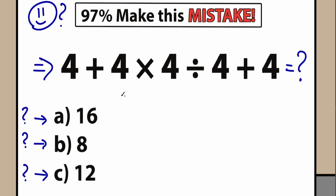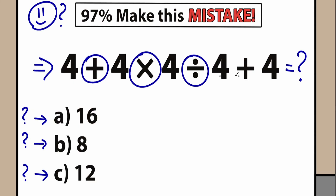This is a quick and basic algebra question, but a lot of students make this common mistake. We have an addition sign, a multiplication sign, division, and addition. What makes all the difference in the world is the order we do this problem. Do we do addition first? Multiplication first? Division first? Or maybe addition from right to left? Obviously, whatever order of operation we select is going to create a different answer.